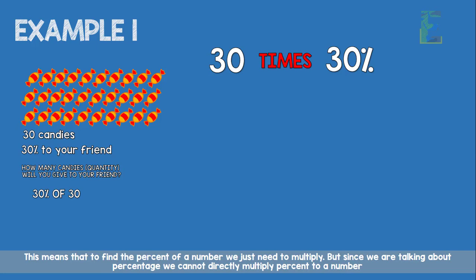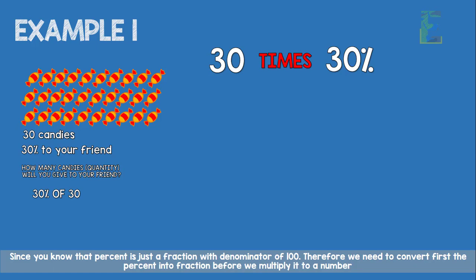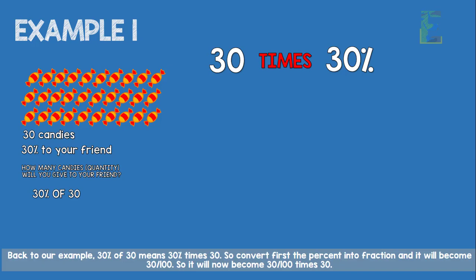But since we are talking about percentage, we cannot directly multiply percent to a number. Since percent is just a fraction with denominator 100, we need to convert the percent into a fraction first before we multiply it to a number. Back to our example, 30% of 30 means 30% times 30. So convert the percent into a fraction and it will become 30 over 100.